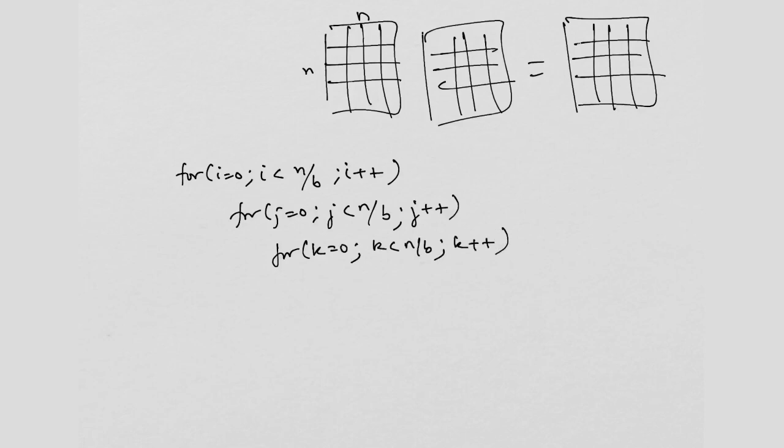k plus plus, hash pragma OMP task. What am I going to do in this task? I am not writing, I am just telling you what I will do over here, right?